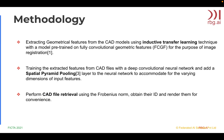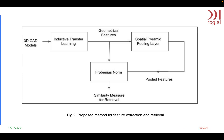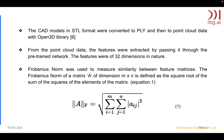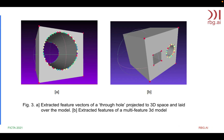Now to the methodology. We extracted the geometric features from CAD models using inductive transfer learning with a model pre-trained on fully convolutional geometric features for image registration. Then we trained the extracted features with a deep convolutional neural network and added a spatial pyramid pooling layer to handle different dimensions of input features. We performed 3D CAD retrieval using the Frobenius norm, obtained their IDs and rendered them for inference. The CAD models in STL format were converted to PLY and then to point cloud data with the Open3D library. The features were extracted by passing the point cloud data through the pre-trained network, and the features were 32-dimensional in nature. The extracted feature vectors are projected to 3D space and laid over the CAD model, and the same can be done for multi-feature 3D models, though here we are only considering single features.